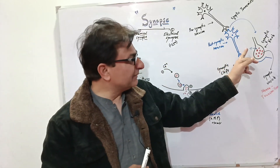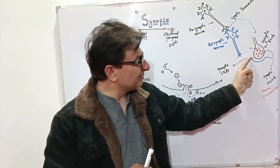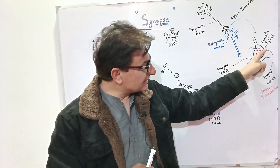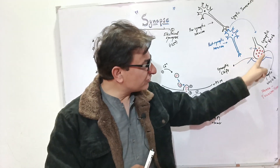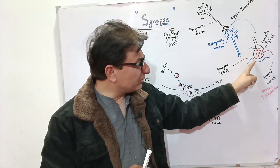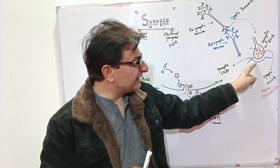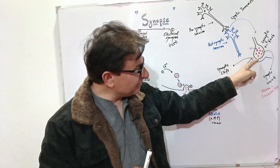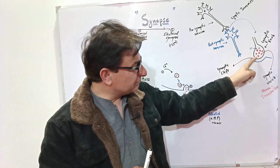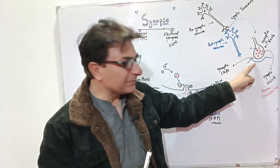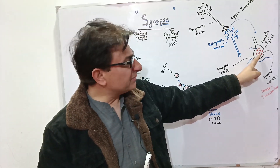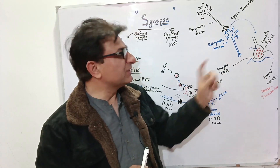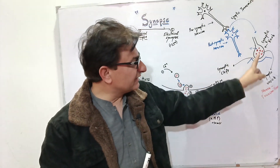The structure of the synapse: if you enlarge this portion, you can see that the pre-synaptic membrane forms a knob-like structure called the synaptic knob. Between the pre-synaptic and post-synaptic membranes, there is a microscopic gap called the synaptic cleft. The synaptic knob contains a large number of synaptic vesicles, which consist of neurotransmitters.